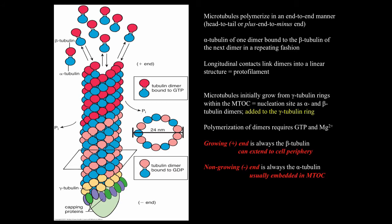Microtubules initially grow from gamma tubulin rings within the microtubular organizing center. These gamma tubulin rings serve as the nucleation site for alpha and beta tubulin dimers. The dimers are added to the gamma tubulin ring, and polymerization requires GTP and magnesium, as shown in this diagram — tubulin dimers bound to GTP versus those bound to GDP.